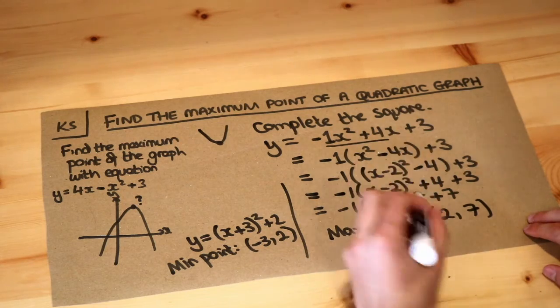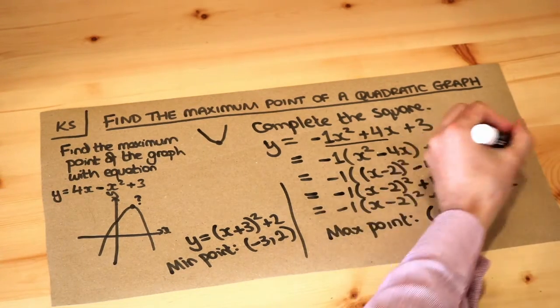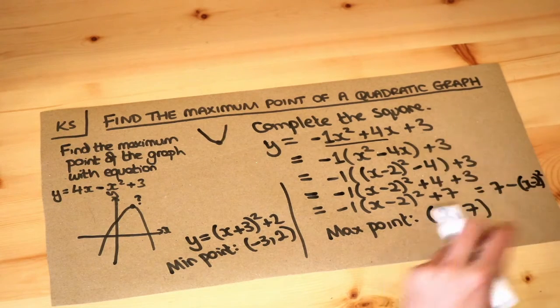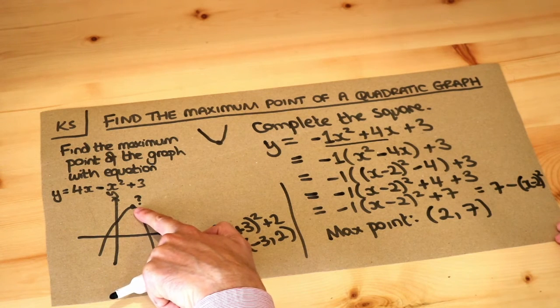The reason it works is that if I write this in a more convenient form, like 7 minus x minus 2 squared, we want to make y as big as possible, because at this point here, y should be as big as possible.